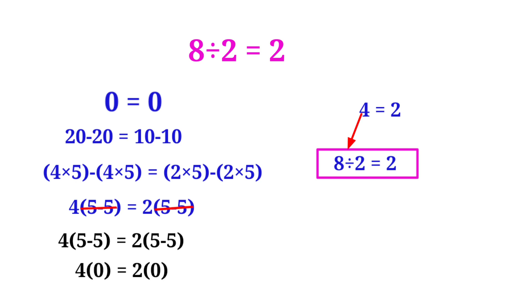So we can write as 4 times 0 equals 2 times 0. Therefore 0 equals 0. This is the right process.